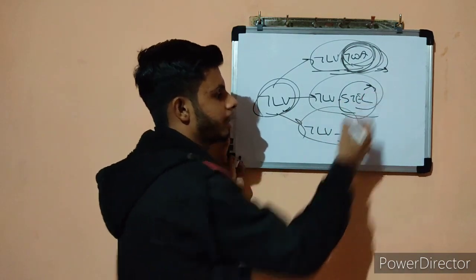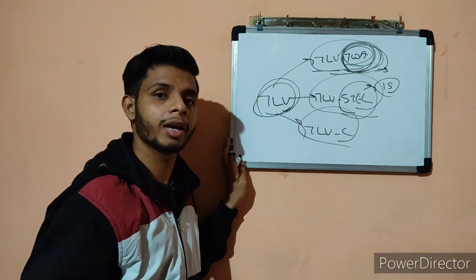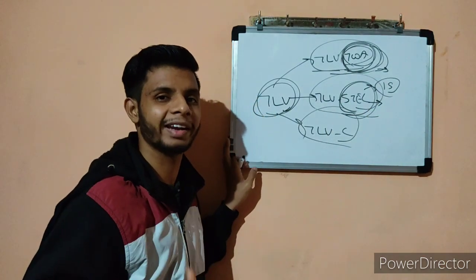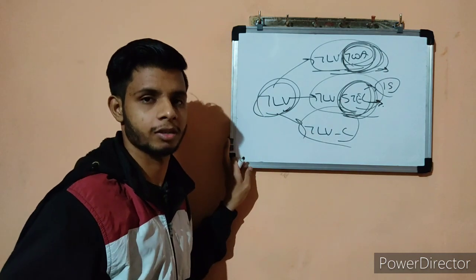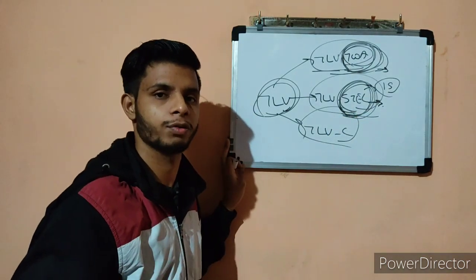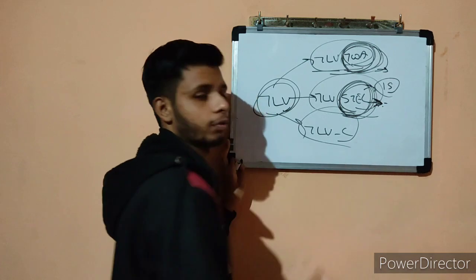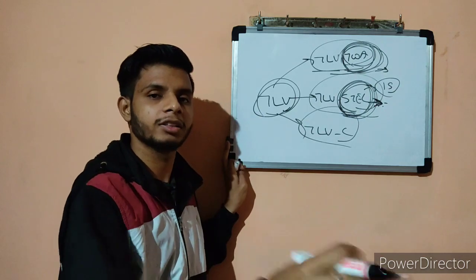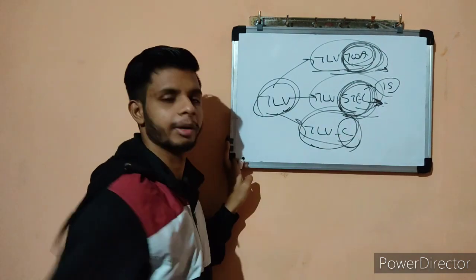STEL — Short Term Exposure Limit — as its name suggests, if you are planning to work in an area for a short time, 15 minutes or less, and the chemical concentration is higher there, STEL determines what the allowable chemical concentration should be. STEL is used for short-term works when going above and beyond the TWA. Every chemical has different TWA, STEL, and ceiling limits — a full list is available on the ACGIH website.